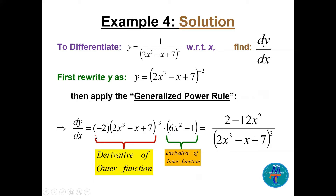Bringing down the −2 gives −2·(2x³ − x + 7)^(−3) times the derivative of the inside, which is 6x² − 1. Moving the power to the denominator and multiplying −2 times −1 gives dy/dx = (2 − 12x²) / (2x³ − x + 7)³.